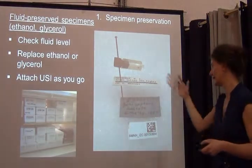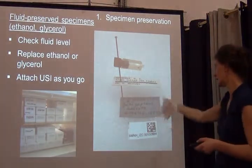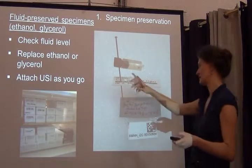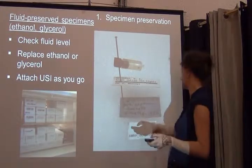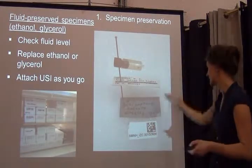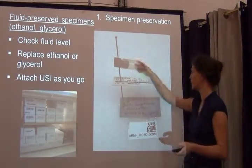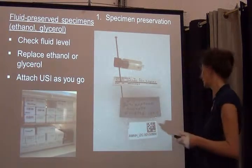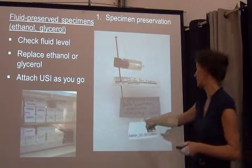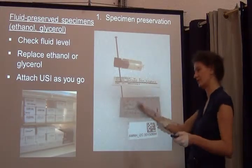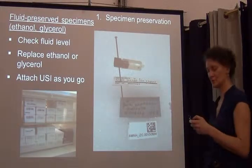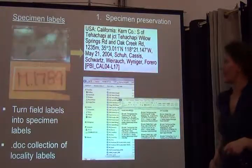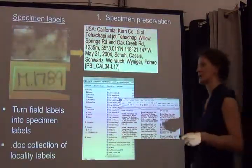Similar to microscopic slides, when we curate these glycerol or microscopic slide collections we attach unique specimen identifiers as we go. In this case it's fairly simple because it really works like an insect pin — you just stick the barcode label as the bottom-most label on the pin.